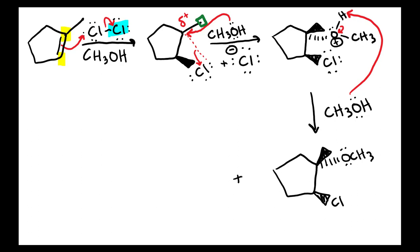However there was no reason that the first chlorine had to add on a wedge. It could have added on a dash. Had the first chlorine added on a dash then the back face would have been really crowded and that means that the methanol would have attacked from the front face on a wedge. So then the methanol would have been on a wedge over here, OCH3, and then of course that means the methyl group would have been pushed in the back on a dash.